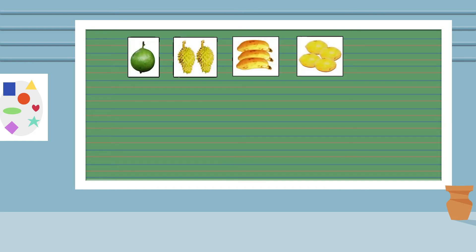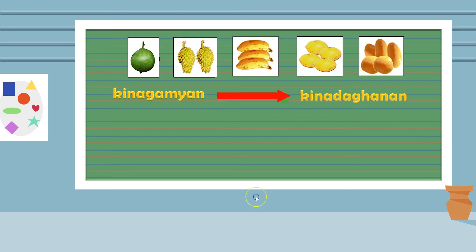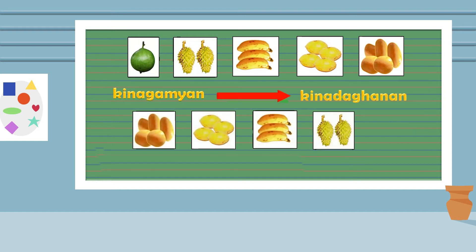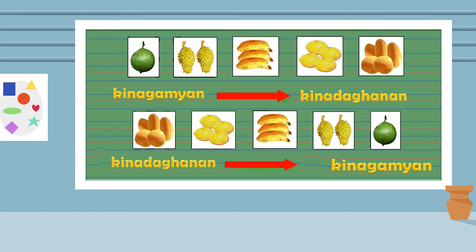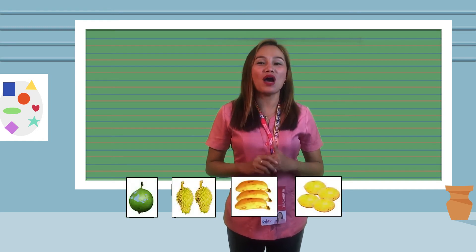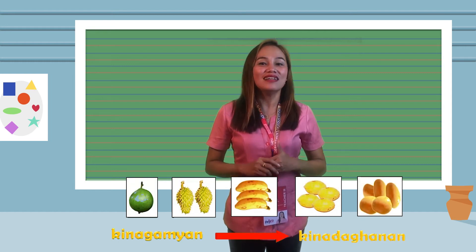Ang paghanay sa mga pundok magdependi kung pila ka buok ang nasa sulod sa pundok, o kung unsa ang paagi sa paghanay. Adunay duha ka pamaagi sa paghanay sa mga pundok: ang unang pamaagi mao ang paghanay gikan sa kinagamyan ngadto sa kinagaghanan, ug ang ikaduhang pamaagi mao ang paghanay gikan sa kinagaghanan ngadto sa kinagamyan.